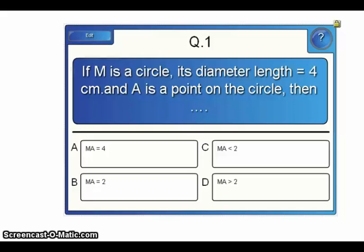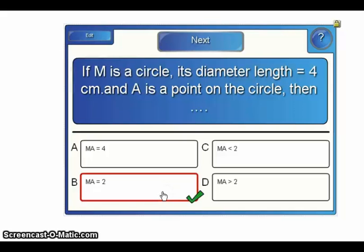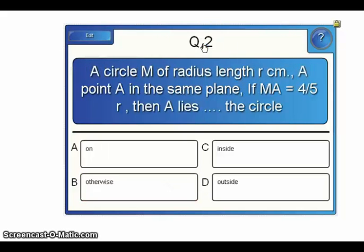In this exercise, we have circle M with diameter length 4 cm, which means its radius length equals 2 cm. Point A is on the circle, so the distance between point A and center M equals the radius of the circle. Therefore, the correct answer is MA equals 2 cm — letter B.